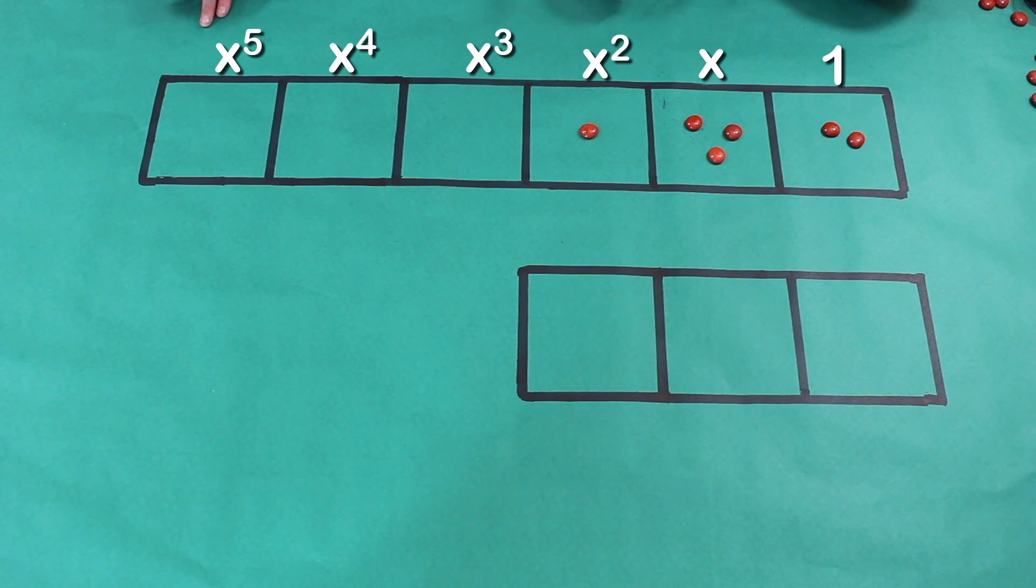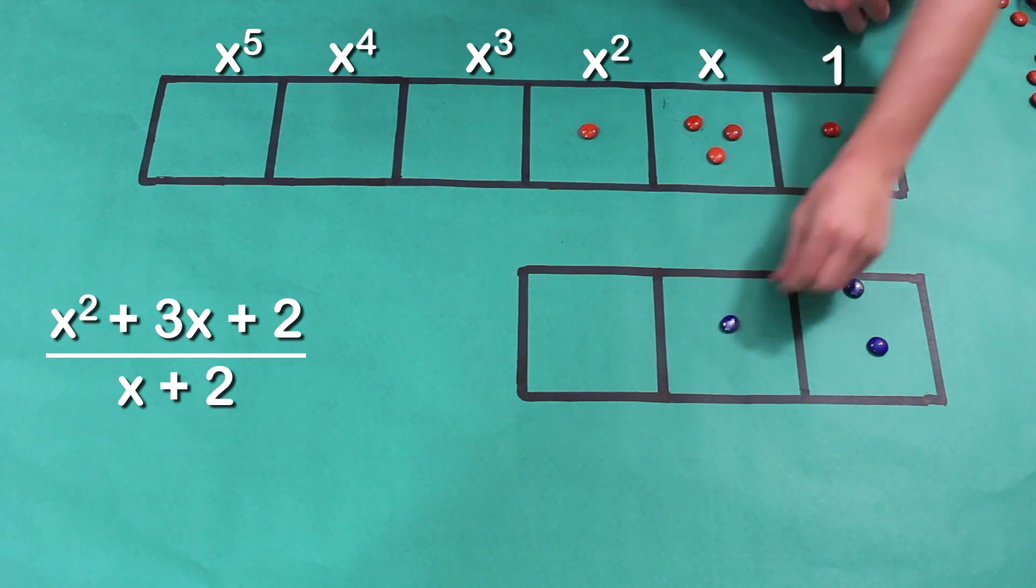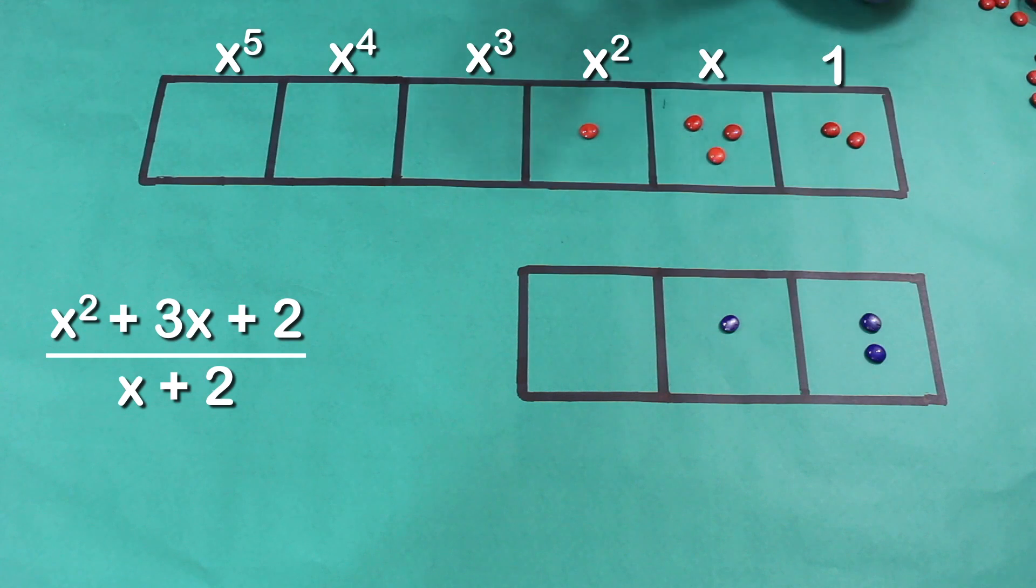We have the polynomial X squared plus 3X plus two, and we're going to divide that polynomial by X plus two. And so to show that, we're going to look at it down here, where in the ones box, we're going to put two dots to represent the plus two, and in the X box, we're going to put one. And so it works just like, at this point, it's just like what you've already learned with division, just with fancier names.